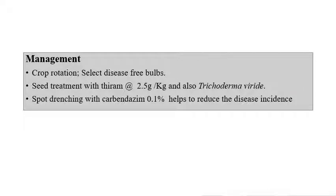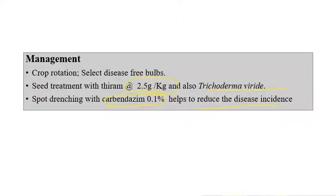For management of Basal Rot: practice crop rotation and seed treatment with Thiram at 2.5 grams per kilogram, or use Trichoderma. Spot spraying with 0.1 percent Carbendazim also helps to reduce the incidence of the disease.